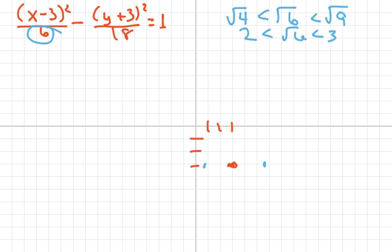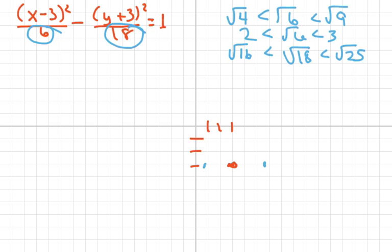For the y-direction, I use √18, which is between √16 and √25, so between 4 and 5. From the center I go up 4 and a little more, and down 4 and a little more. Then I draw a rectangular box using those points.